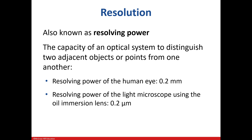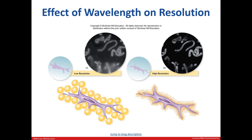Resolution, also known as resolving power, is the ability to distinguish two separate entities from each other. We have a resolution of 0.2 micrometers, meaning that in order for our eyes to see two separate objects as being separate, they must not be closer than 0.2 millimeters to one another. Microscopes have a much better resolution. In this image, we can see how increased resolution gives us the ability to see finer details.